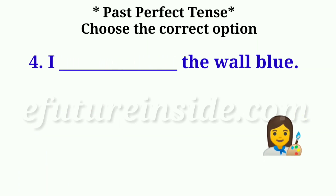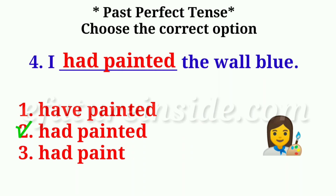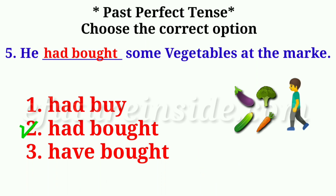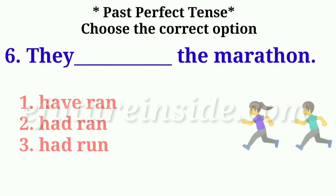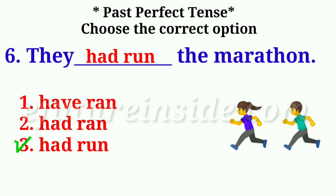Question 4: I ___ the wall blue. Answer: I had painted the wall blue. Question 5: He ___ some vegetables at the market. Answer: He had bought some vegetables at the market. Question 6: They ___ the marathon. Answer: They had run the marathon.